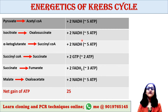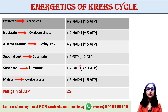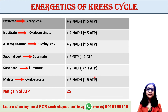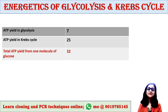1 NADH is equivalent to 2.5 ATP, so 2 NADH are equivalent to 5 ATP. 1 GTP is equivalent to 1 ATP, so 2 GTP are equivalent to 2 ATP. 1 FADH2 is equivalent to 1.5 ATP, hence 2 FADH2 are equivalent to 3 ATP. Therefore, the net gain of ATP from Krebs cycle is 25.